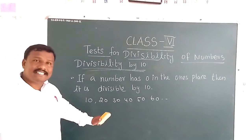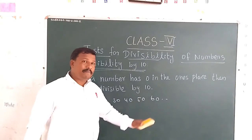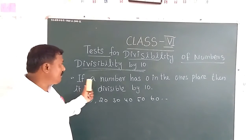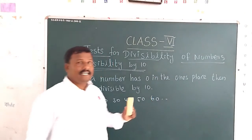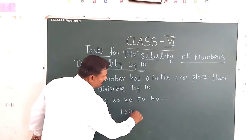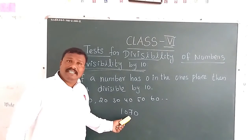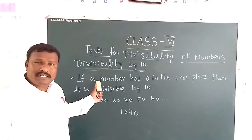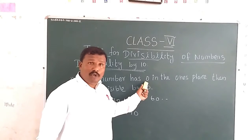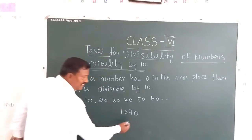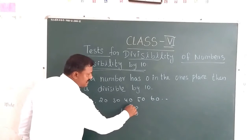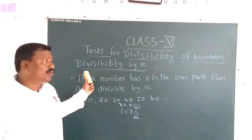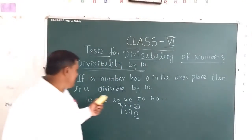In the multiples of 10, we can observe that if any number has 0 in the one's place, then that number is divisible by 10. That is the divisibility rule for 10. For example, take the number 1070. We know the place values: ones, tens, hundreds, thousands. In the one's place of 1070, the digit is 0, so as per the divisibility rule for 10, we can divide it by 10 easily.